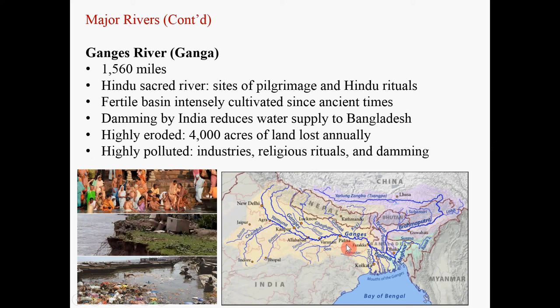India has built some dams on the Ganges River. One particular place has a dam called the Farakka Barrage, built to divert water from the Ganges River for city usage. But that reduced the water supply to Bangladesh, so between India and Bangladesh there are also water usage disputes.